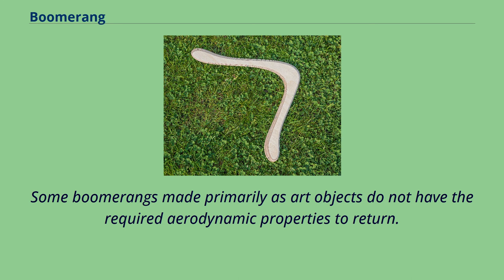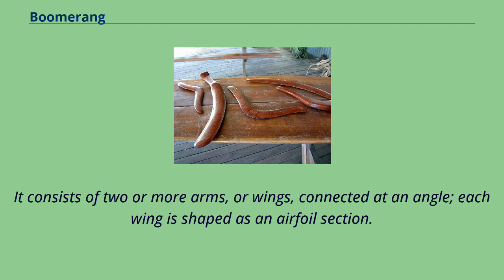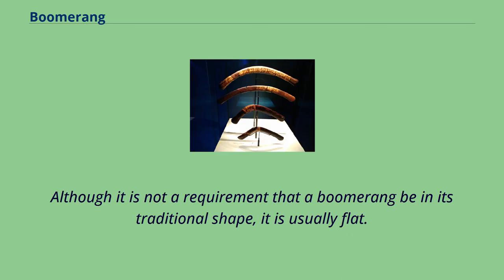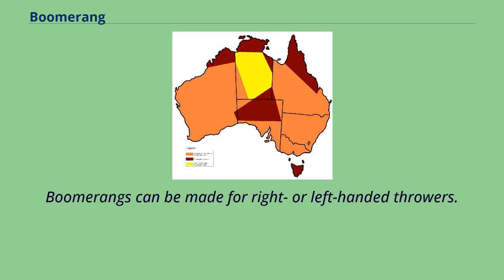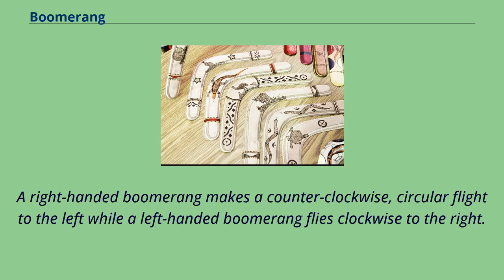A returning boomerang is a rotating wing. It consists of two or more arms, or wings, connected at an angle, with each wing shaped as an airfoil section. Although it is not a requirement that a boomerang be in its traditional shape, it is usually flat. Boomerangs can be made for right or left-handed throwers — the plan form is the same but the leading edges of the airfoil sections are reversed. A right-handed boomerang makes a counterclockwise circular flight to the left, while a left-handed boomerang flies clockwise to the right.